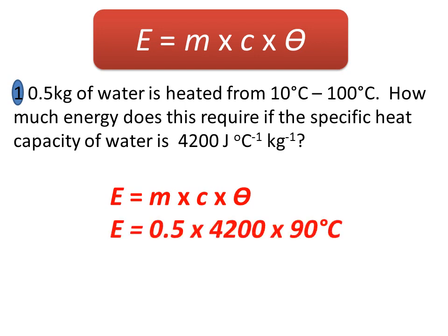So the temperature difference in this case is 90 degrees, which is the difference between 10 and 100 degrees centigrade. Times all these numbers together and we end up with 189,000 joules, which is 189 kilojoules, just in case it wants you to do some conversions in the question.